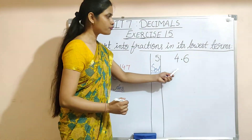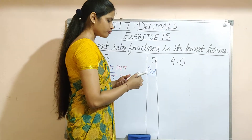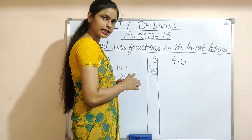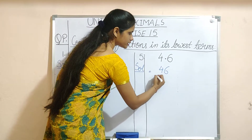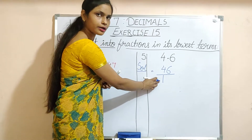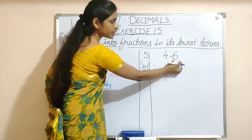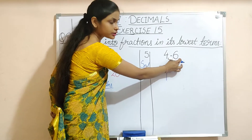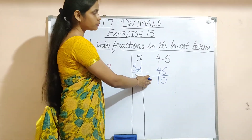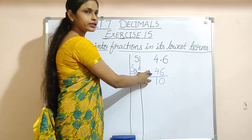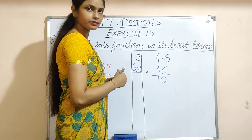Let us do one more question. 4.6 is the number. Apply the same rule here. First, remove the decimal sign and write the number as the numerator — this is 46. Then in the denominator, write 1. Now, count the number of digits after the decimal. It has only one digit after the decimal, so you will put only 10. Now you have to reduce this into its lowest term by dividing with a common factor. You have already studied the divisibility rule.